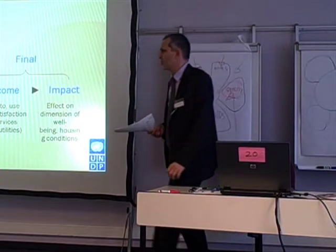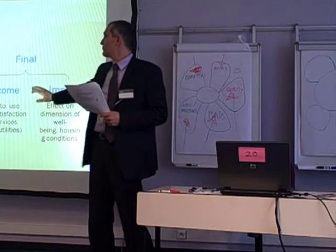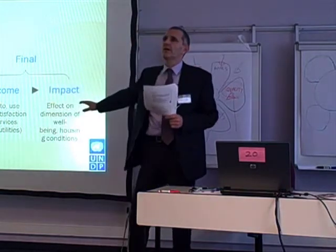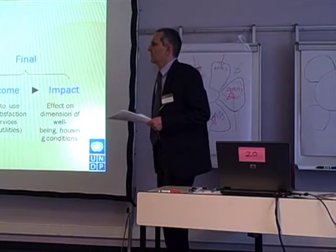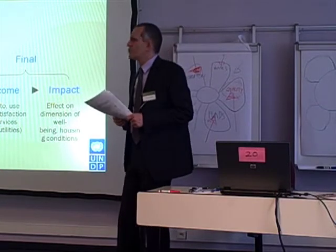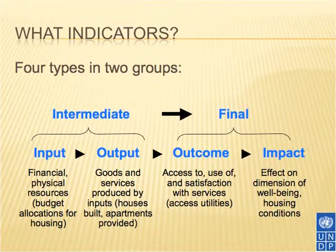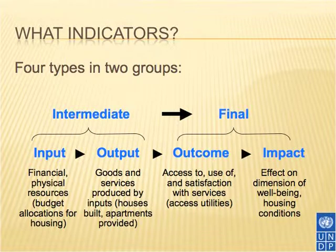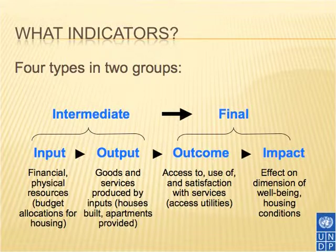We should also clearly distinguish types of indicators. Basically we have four types summarized in two groups: intermediate and final indicators. Inputs are what we put into the process — number of person-days, money invested, and so on. Outputs are what is produced — for example, the number of lectures delivered is an output. The outcome of those lectures would be your knowledge or curiosity. And the impact would be when you use that knowledge in your future professional activities. These are all different things, measured and populated by different types of data, and they have different meaning.